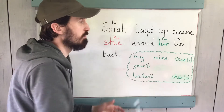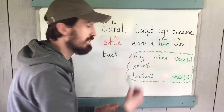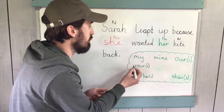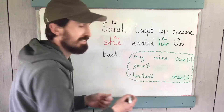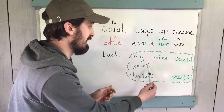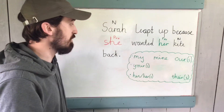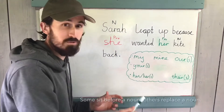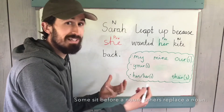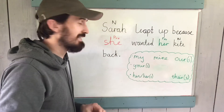So the challenge was to find a possessive pronoun to go in place of the before kite, and in this case I've gone for her kite. This is one example of a type of possessive pronoun. You can see some others here — first person, second person, and third person possessive pronouns. Some of them sit before a noun within a noun phrase; some of them would replace a noun entirely.